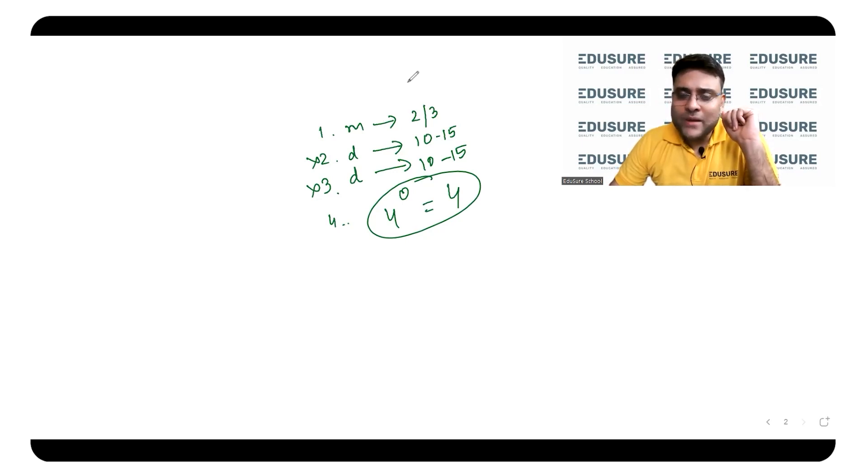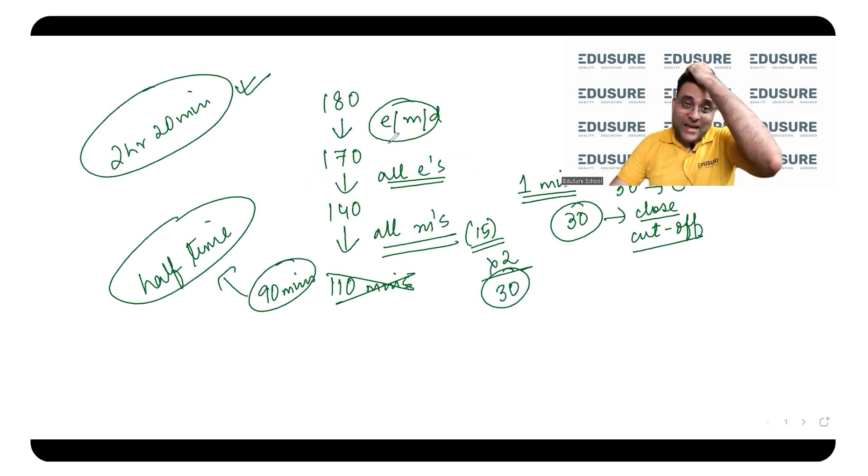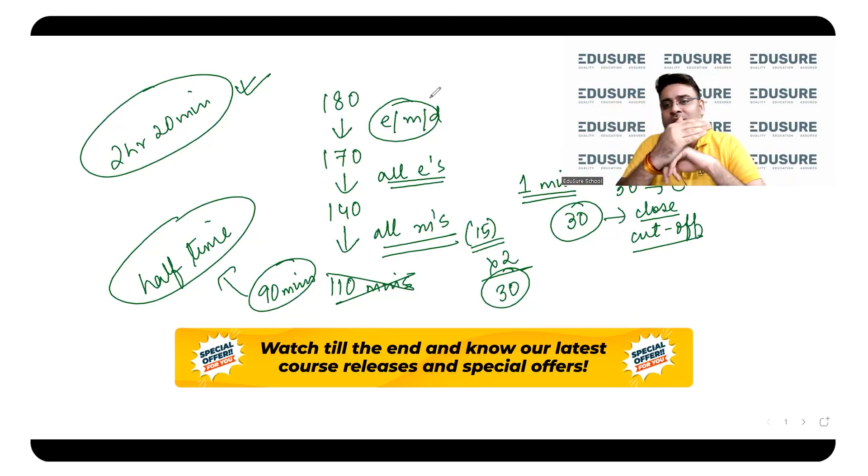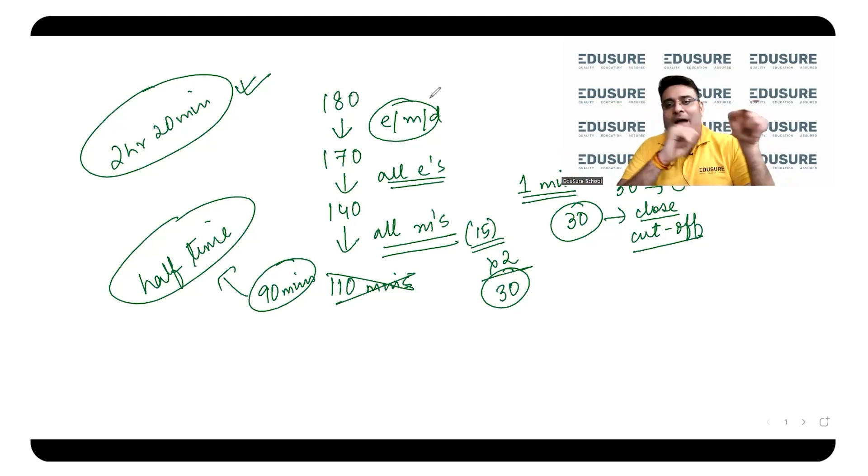You can do any section first, that's up to you, but you will have to attempt the entire paper. So please analyze the entire paper first, and then you can shuffle between each and every section. That's not at all an issue. It's a computer-based examination - you can shuffle, you can go into the second and the third section, then go back to the first. It's absolutely fine. You can do that. So this is how you will attempt the paper.